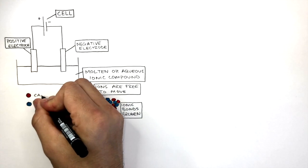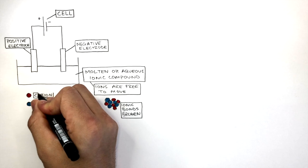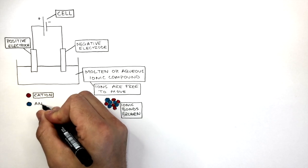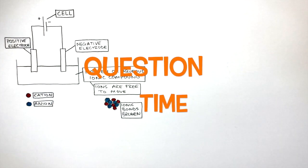The red circle represents a cation which is a positively charged ion, and the blue circle represents an anion which is a negatively charged ion.